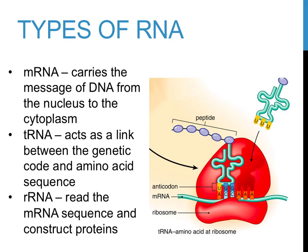mRNA stands for messenger RNA. Messenger RNA carries the code, or the message, of DNA from the nucleus to the cytoplasm, where it is used. tRNA stands for transfer RNA. It acts as a link between the nucleic acid, or DNA code, and the amino acid sequence being assembled into a protein, transferring amino acids and the code within the cell. rRNA stands for ribosomal RNA. Ribosomes read the mRNA sequence and act as a protein assembly line. All three of these forms of RNA and their uses will be described in later videos on replication, transcription, and translation.